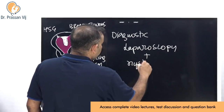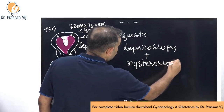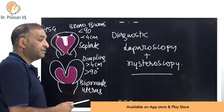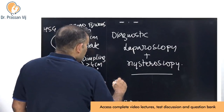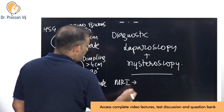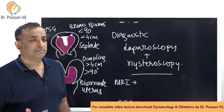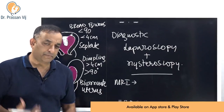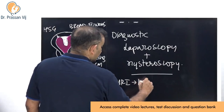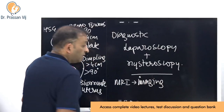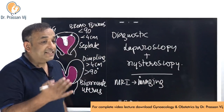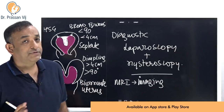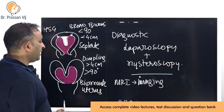Laparoscopy plus hysteroscopy in the same sitting is the only way to definitively distinguish the two. If surgery is not an option, MRI is fairly good for imaging. If an exam question asks which imaging technique best distinguishes septate from bicornuate, the answer is MRI. But overall, the best way is laparoscopy and hysteroscopy combined.